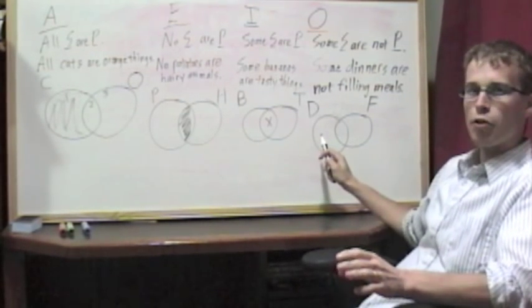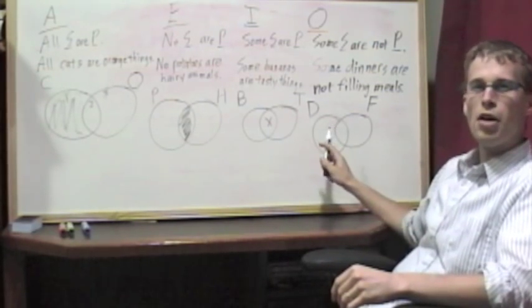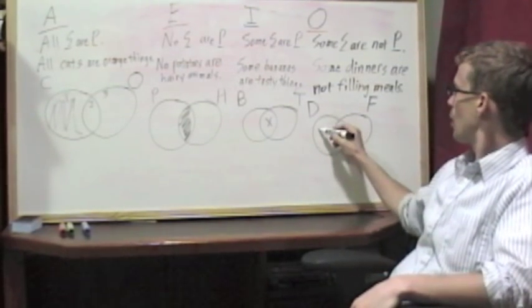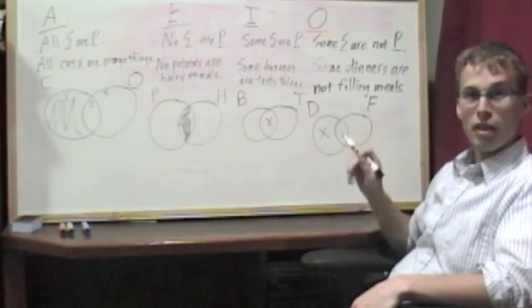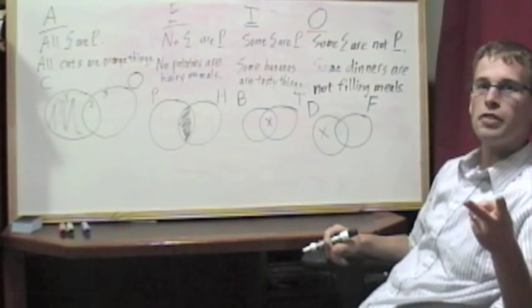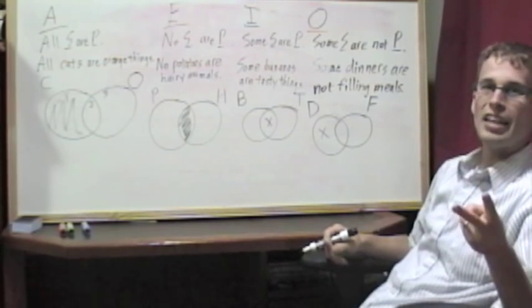And we're saying that at least one thing is there. So we're not doing shading now. Remember, you only shade for universal claims. Since this is a partial claim, we have to use an X. We want to say that something is over here on the left, saying it is a dinner, and it is not a filling meal.